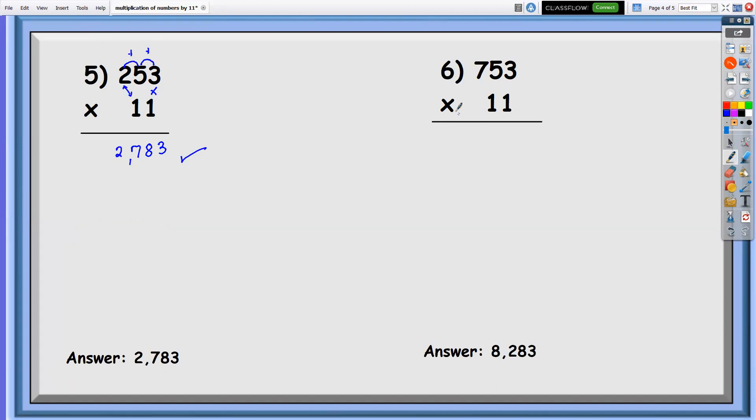And the last number, we have number six. So let's multiply this. Three times one, that is three. Add the last and second to the last digit. So five plus three, we have eight.